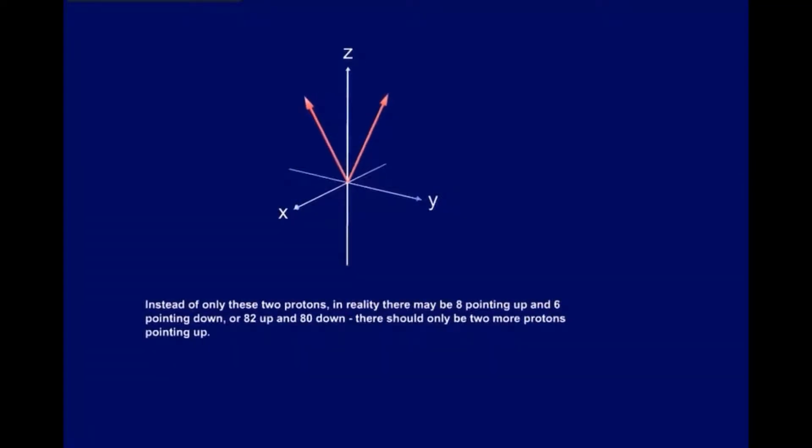Instead of only these two protons, in reality there may be eight pointing up and six pointing down, or eighty-two up and eighty down. There should only be two more protons pointing up. As we know, these are the ones that have a net magnetic effect because their effects are not cancelled out.